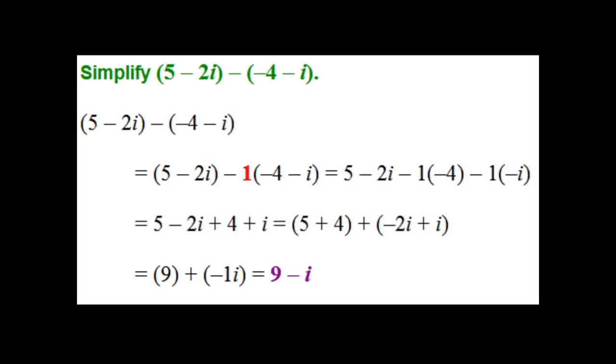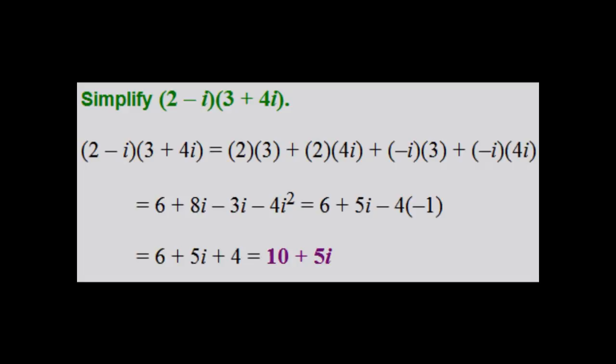Subtraction is pretty much the same. You must subtract real numbers from real numbers, and then subtract the imaginary numbers from imaginary numbers. Remember though, that when subtracting, it is like there is a negative 1 in front of the second complex number, and it must be distributed as shown here in the example. After subtracting like terms, which in this case is adding 5 and 4 together, and negative 2i and i together, you will get 9 minus i as the answer.